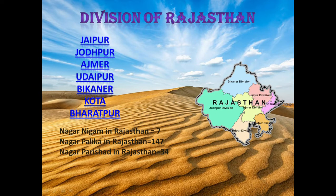The divisions of Rajasthan are Jaipur, Jodhpur, Ajmer, Budhapur, Bikaner, Kota, and Bharatpur. Nagar Nigam in Rajasthan is seven, Nagar Palika is 147, and Nagar Parishad is therefore. The word 'division' means the areas where kings ruled.